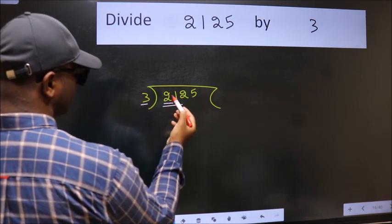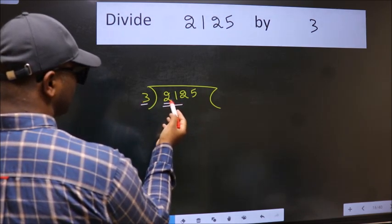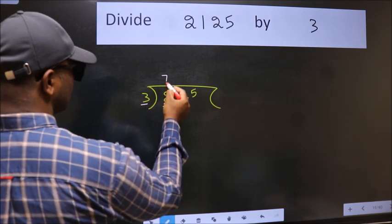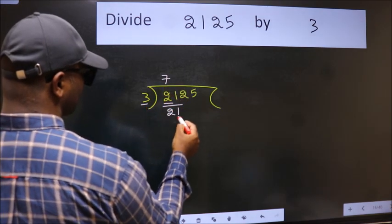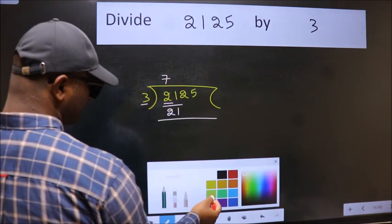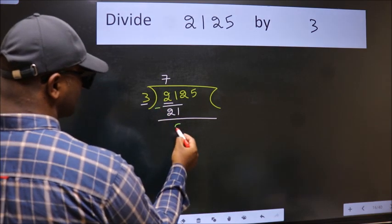So we should take 2 numbers, 21. When do we get 21 in 3 table? 3 times 7 is 21. Now we should subtract. We get 0.